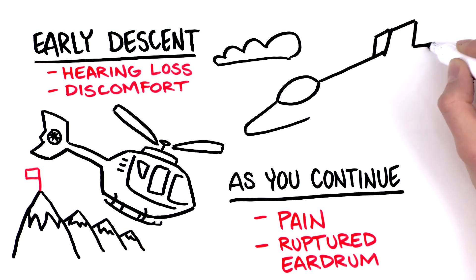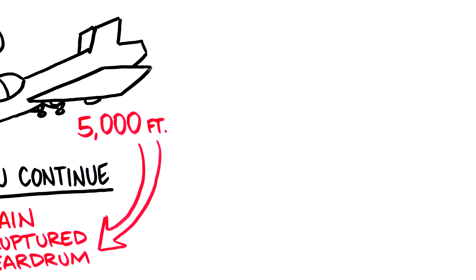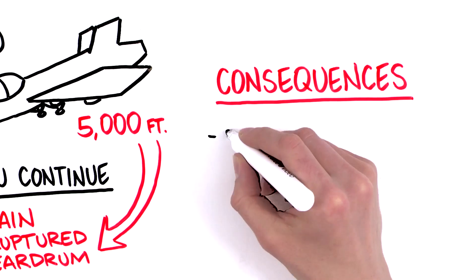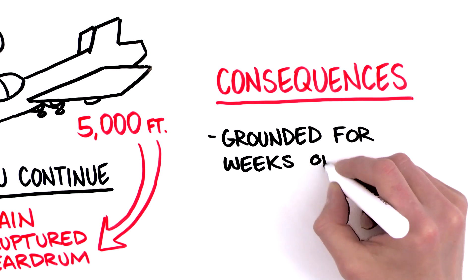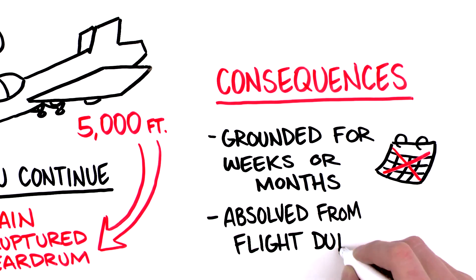Don't believe it? Even at lower flight levels, a descent of 5,000 feet is enough to rupture the eardrum when you can't equalize the pressure. Possible consequences: grounded from flight duty for a period of several weeks to several months. In extreme cases, total grounding.